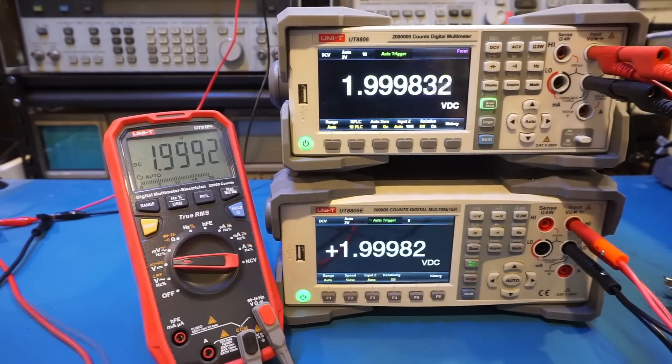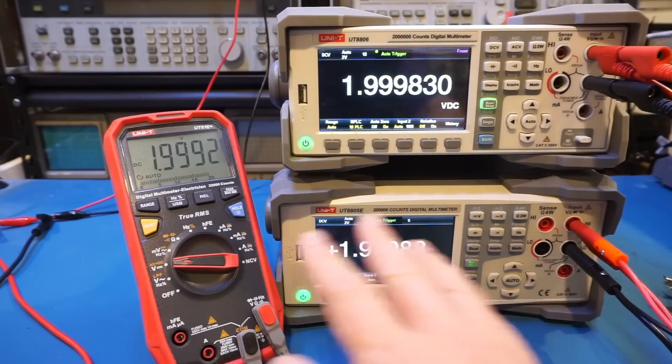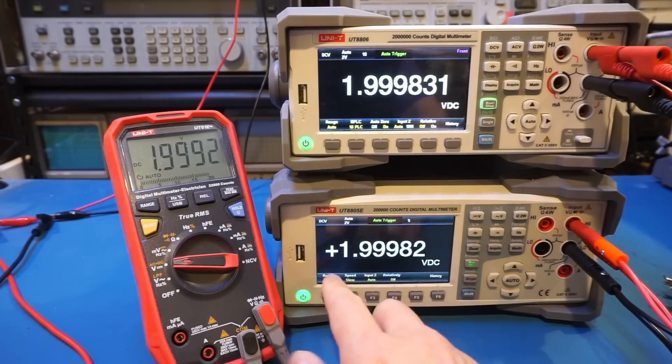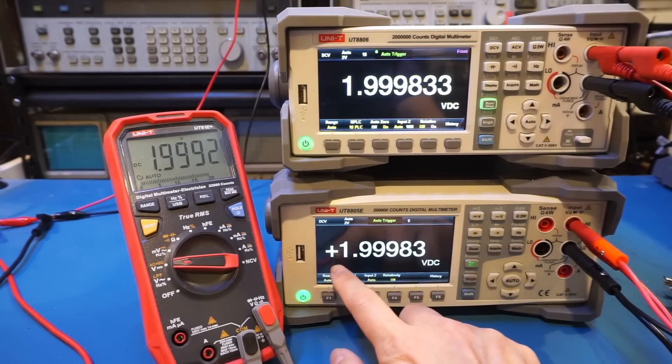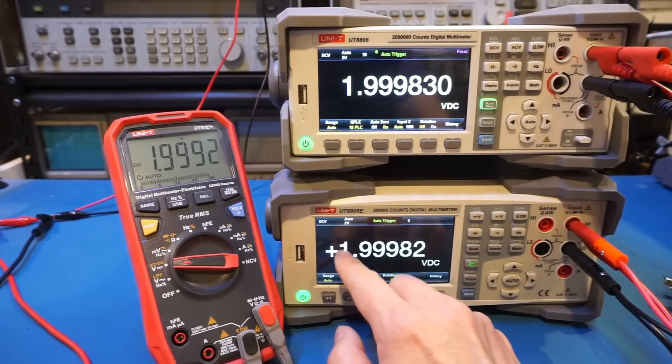So what is the convention? Well, let's use this 5.5-digit meter as an example. You can see that, given the readings here on the screen, we have five full digits, 1, 2, 3, 4, 5, and full digits means they can display between 0 and 9. And then we have this leading digit that is currently 1, and that is counted as the half digit.